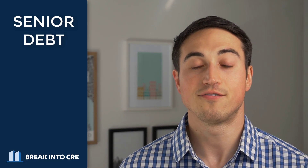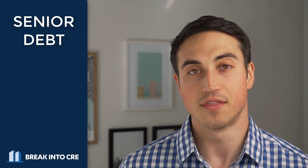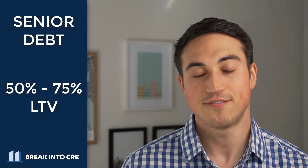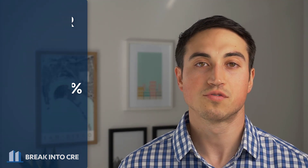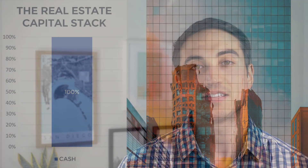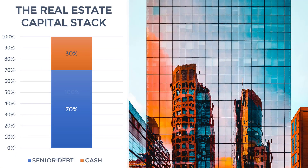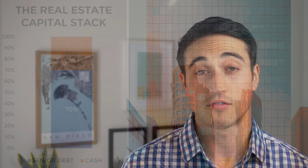Usually in commercial real estate, you'll have some sort of loan on the property — specifically senior debt — where that lender is in first position to foreclose in case anything happens on the deal. Usually the senior debt is somewhere between 50 and 75% of the overall purchase price, which reduces your cash commitment and adds another chunk to that bar graph. In this example, let's say we have $7 million of loan proceeds for a 70% loan-to-value ratio.